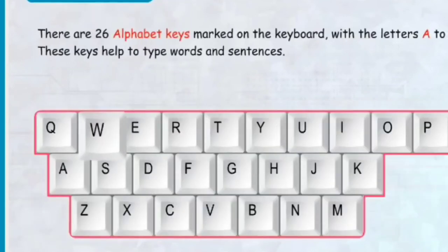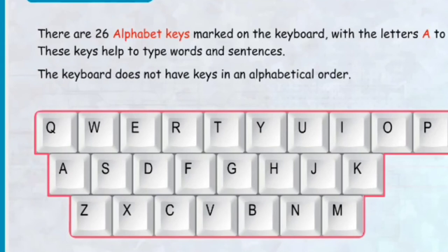There are 26 alphabet keys marked on the keyboard with the letters A to Z. These keys help to type words and sentences. The keyboard does not have keys in alphabetic order.